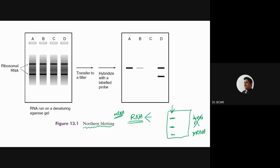All the distinct bands you see upon RNA isolation are usually ribosomal RNA - rRNA. They are the most abundant RNA; you have multiple copies of each. One band is very small so sometimes it might run out of the gel or be faint. The large rRNA species - 23S or 16S - are the ones you usually see.